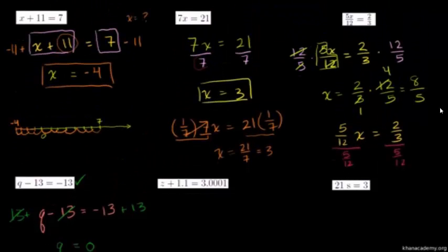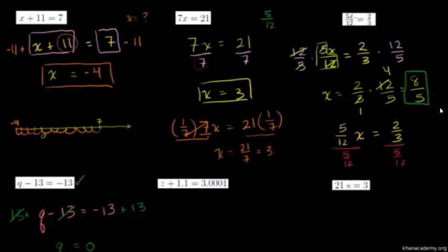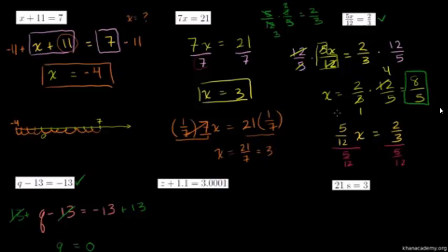The fun thing about algebra is you can always check your answer. We got x is equal to 8 fifths. Let's check: 5 over 12 times 8 over 5 — the 5s cancel, then dividing 8 by 4 gives 2 and dividing 12 by 4 gives 3 — equals 2 thirds. So we can verify that's correct. Once you get your answer, you can always confirm you got it right.